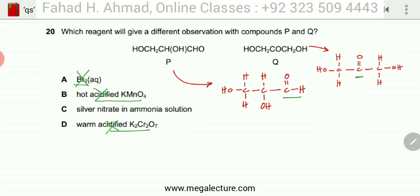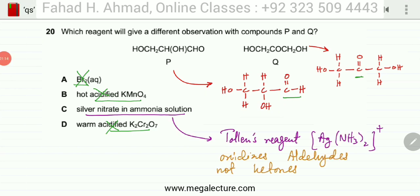So which one is going to give a different observation? You are left with silver nitrate in ammonia solution. This option C, silver nitrate in ammonia solution is also known as Tollens reagent which is Ag, Ag ions in ammonia solution that gives you Ag(NH3)2 plus, it forms a complex.